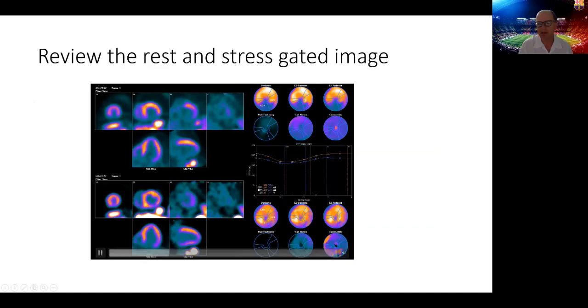We move to the gated images. We display the rest images on the bottom and the stress images on the top, and here you can see severe reduction in left ventricular ejection fraction. Similarly, you can see the ventricular dilatation, rest and stress images with akinesia of the inferior wall in the stress images. The volumes we're dealing with here are end-systolic volumes above 200 for the left ventricle, very important as a prognosticator when generating the report. You can see dilatation of the right ventricle too with some right ventricular dysfunction.